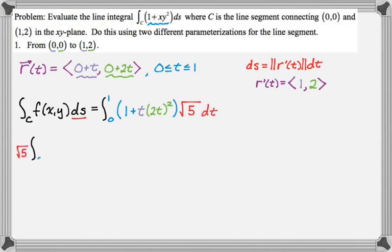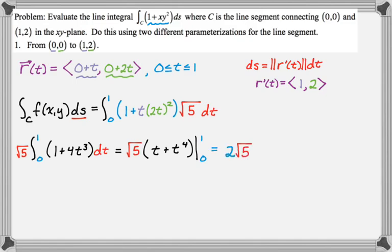This is going to be, pull out the radical 5, and let's integrate. Just reversing the power rule here. From 0 to 1, when we plug in 1, we get radical 5 times 2. When we plug in 0, we get 0. So we just got 2√5. That's our answer.